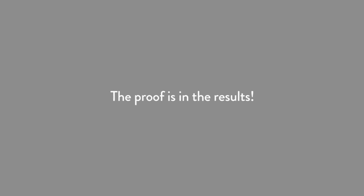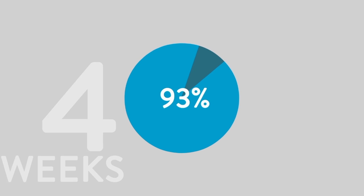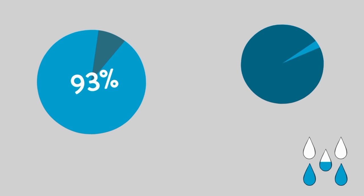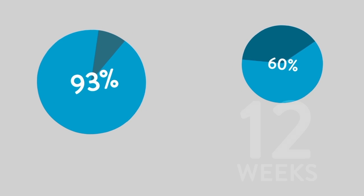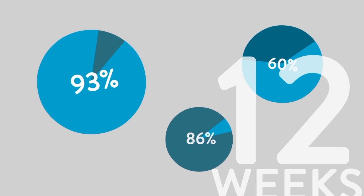The proof is in the results. After four weeks of treatment, 93% of users noted a significant improvement in the amount of involuntary urine leaked and 60% were defined as dry. After 12 weeks, 86% of users were defined as dry or almost dry.